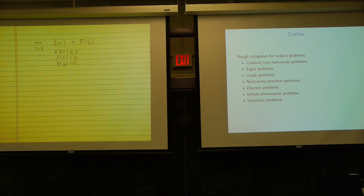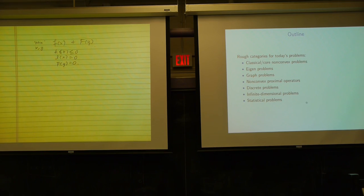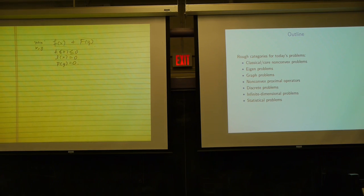Here's an outline for what we'll cover, sectioned into seven categories: classical or core non-convex problems, eigenproblems, graph problems, non-convex proximal operators, discrete problems, infinite dimensional problems, and statistical problems where we don't quite get the global optimum but it's good enough for statistical purposes.